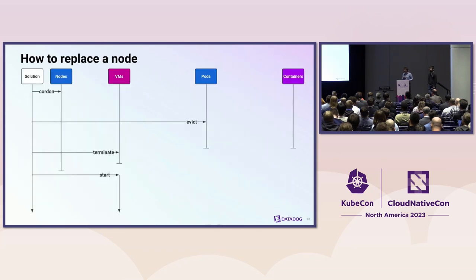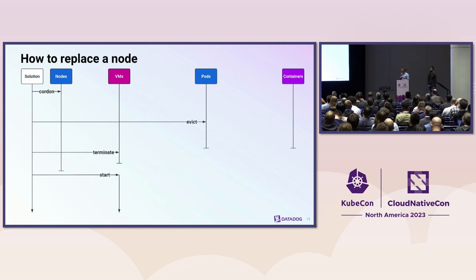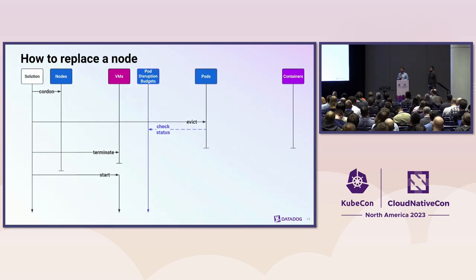To replace a node gracefully, a solution must implement four basic steps: cordon the node, evict the pods — together that's called draining — terminate the old VM, and start a new one. You may want to start the new VM earlier to speed up scaling. To cordon a node, you mark it unschedulable via a spec field, or taint it, so no new pod will land on it. Then you evict the pods, which is a conditional deletion protected by pod disruption budgets. If there is no PDB, the pod is simply deleted — an unprotected deletion.